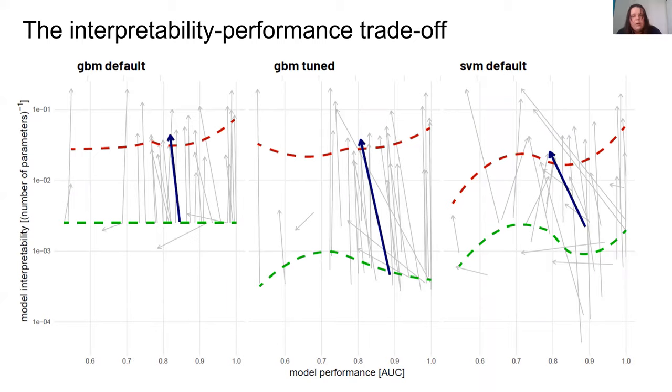Arrows show the change of performance and interpretability when using SAFE. Each arrow stands for a different dataset. The beginning of the arrow shows the performance and interpretability of a complex supervisor model. The arrowhead shows the performance and interpretability of the SAFE-based interpretable model built on features extracted from the complex model.